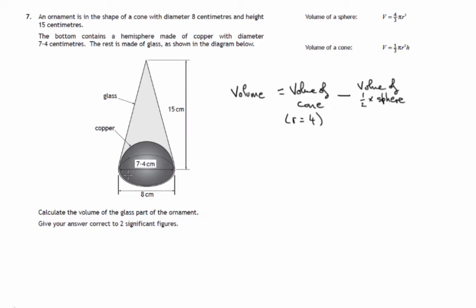And the radius we'd use for the volume of a sphere, or the hemisphere, would be half of the 7.4, which is 3.7. So we'll use 3.7.